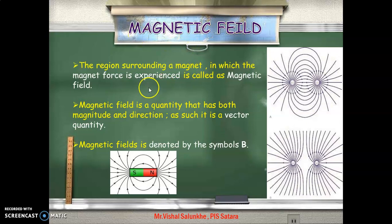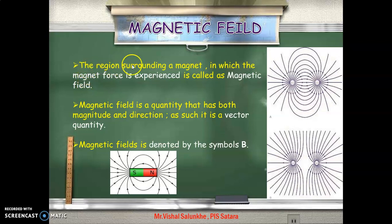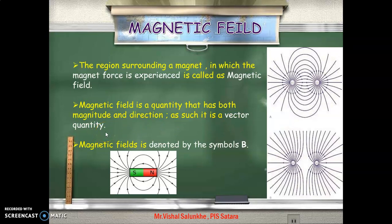So what is magnetic field? The region surrounding a magnet in which the magnetic force is experienced is called the magnetic field. We can practically experience that force by keeping one magnet near another bar magnet. The magnetic field is a quantity that has both magnitude and direction — it is a vector quantity. Magnetic field is denoted by the symbol B.